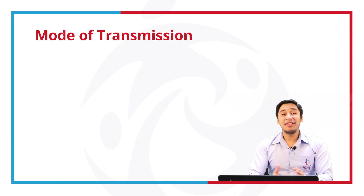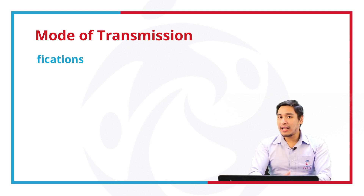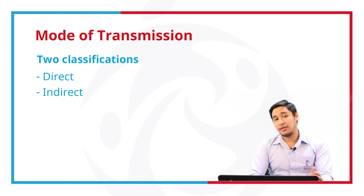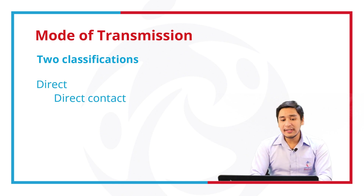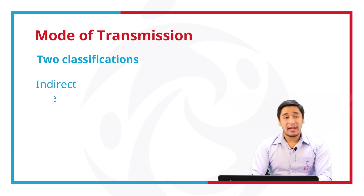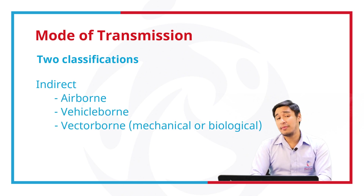The mode of transmission. Within the chain of infection, this is the weakest point wherein healthcare providers can actually break the chain. There are two classifications of the mode of transmission: first is direct, and we have indirect. Direct includes direct contact and droplet spread, while indirect is caused by airborne transmission, vehicle-borne, and vector-borne transmission.